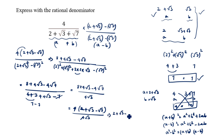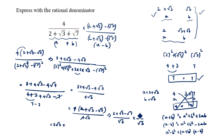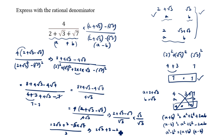The denominator root 3 is still irrational, so we need to rationalize it. We multiply and divide by root 3: giving (2 times root 3 plus root 3 times root 3 minus root 3 times root 7) divided by (root 3 times root 3). This simplifies to (2 root 3 plus 3 minus root 21) divided by 3. This is the final answer.